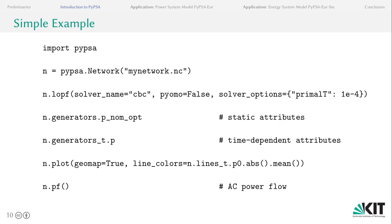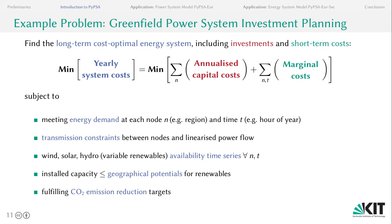There's some plotting functionality available to plot results on a map. You can also run an AC power flow based on the optimized dispatch. For bigger problems, we look at the long-term cost optimal energy system considering both investments and short-term costs, trying to minimize yearly system costs. We have many constraints such as meeting the energy demand, transmission constraints between nodes, power flow, and the availability time series of renewables.